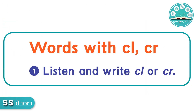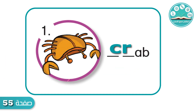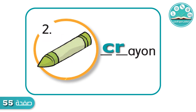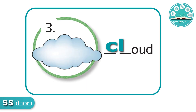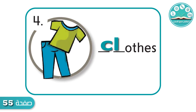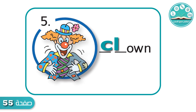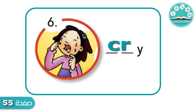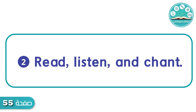Well done! Words with C-L and C-R. Exercise 1: Listen and write C-L or C-R. 1. Crab, crab. 2. Crayon, crayon. 3. Cloud, cloud. 4. Close, close. 5. Clown, clown. 6. Cry, cry.